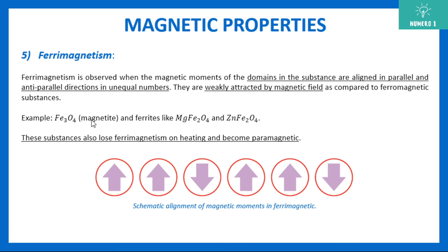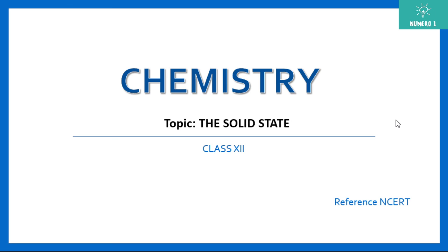Example is Fe3O4 that is magnetite or ferrites, ferrites that is MgFe2O4 or ZnFe2O4. This is magnesium ferrite and this is zinc. So these substances also lose ferromagnetism on heating. So when you heat them, they are arranging again themselves and they become paramagnetic substances. That's it.